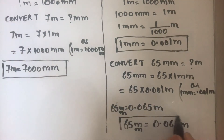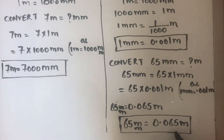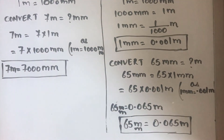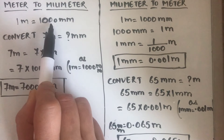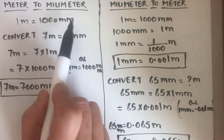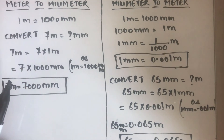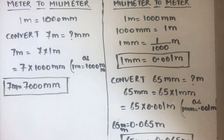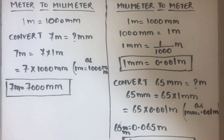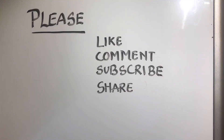This is how you can convert millimeter to meter. For converting meter to millimeter or millimeter to meter, you should know the basic relation which is 1 meter is equal to 1000 millimeter. By knowing only one relation you can convert from meter to millimeter or millimeter to meter. Thanks for watching, please like, comment, subscribe and share my videos.